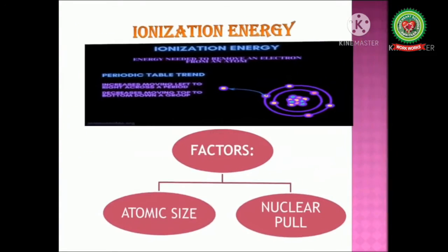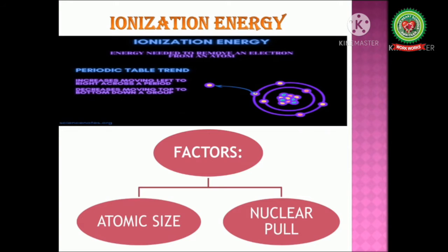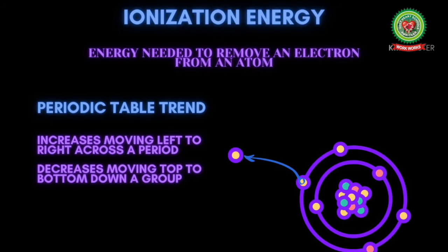The first question arises: what do you mean by ionization energy? Ionization energy is the energy required to remove an electron from a neutral isolated gaseous atom and to convert it into a cation. The SI unit for ionization energy is kilojoule per mole.